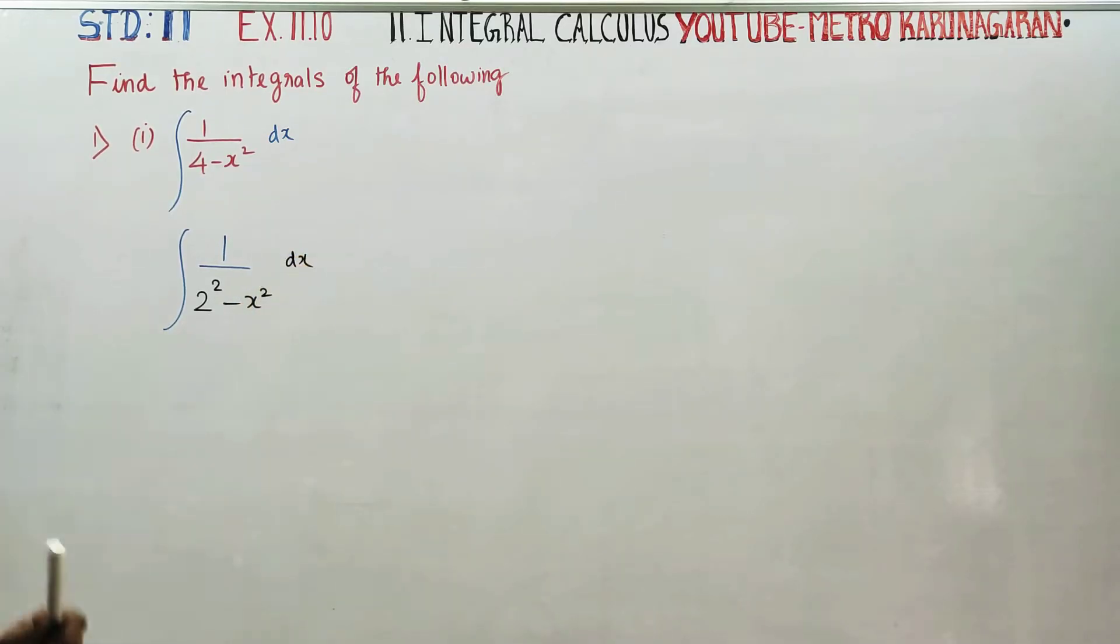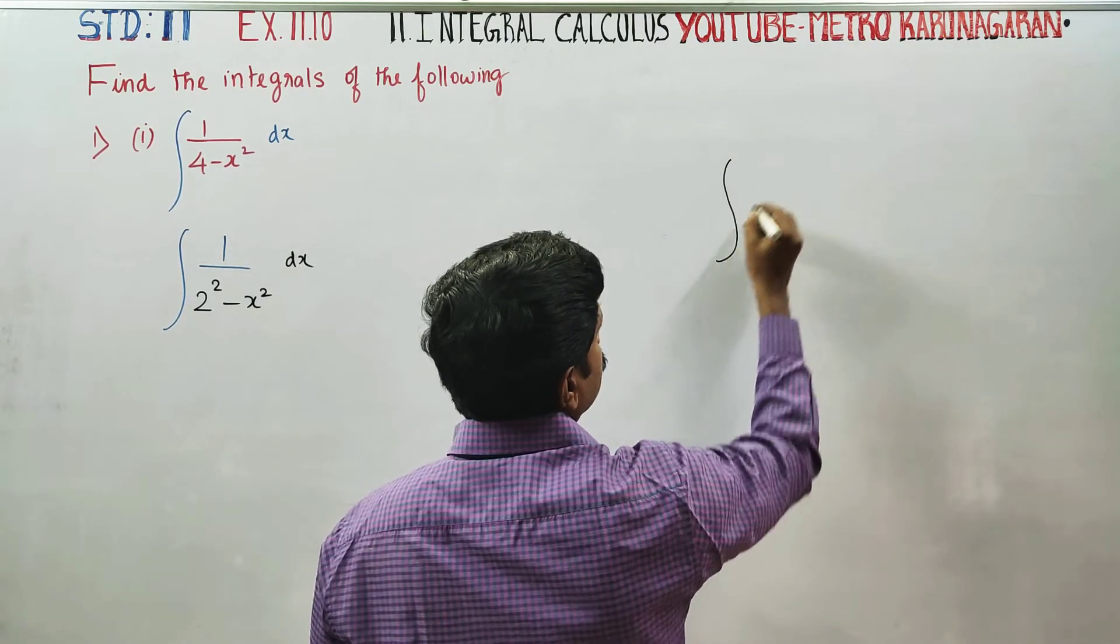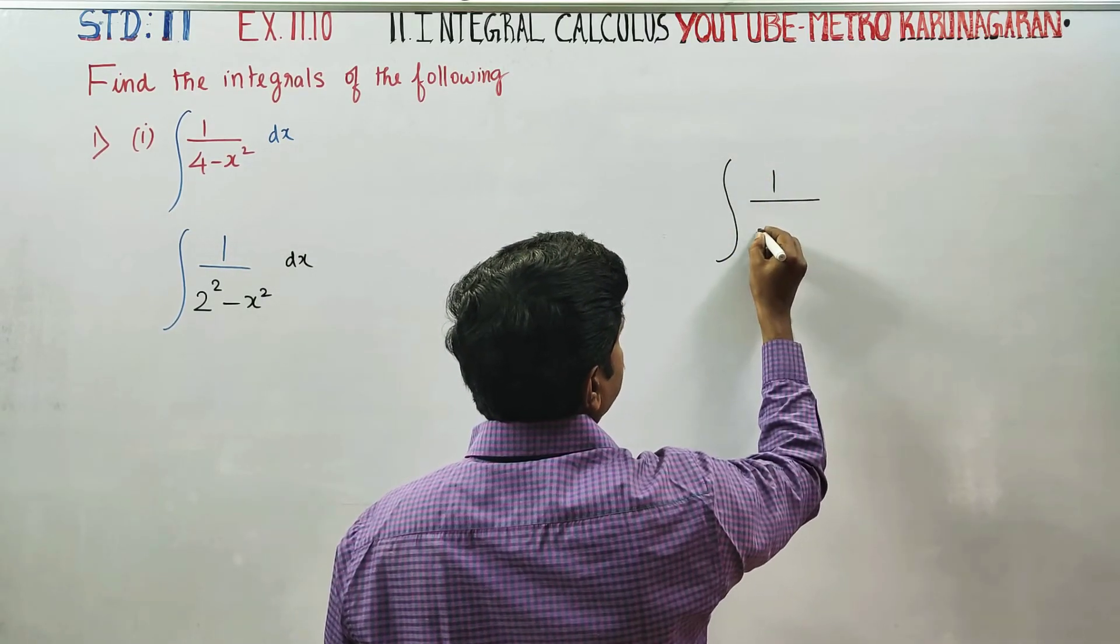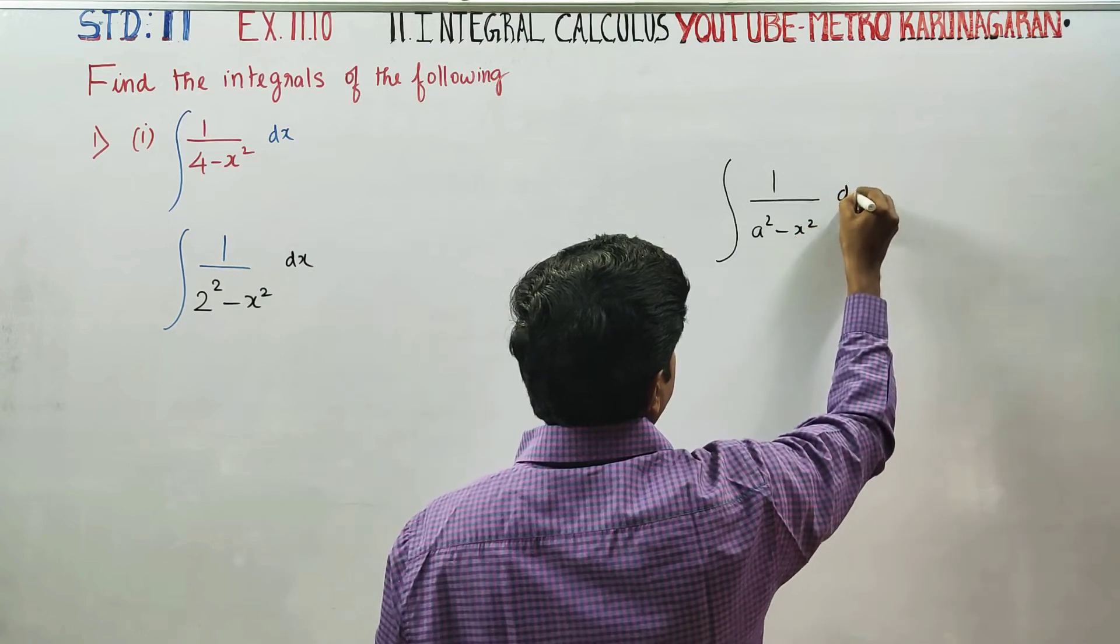In this problem, the formula that matches is 1 by a square minus x square dx.